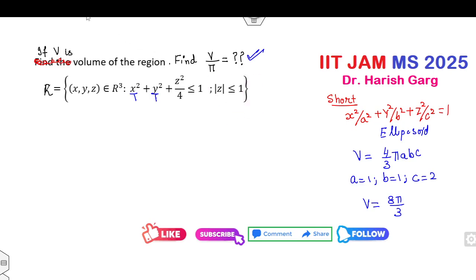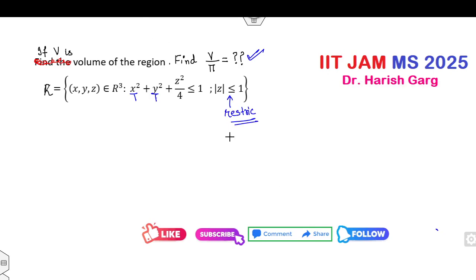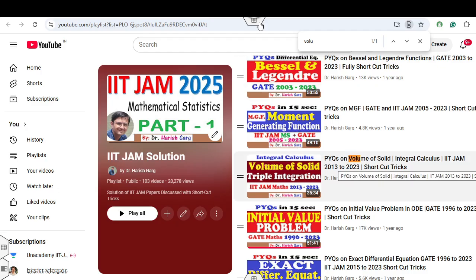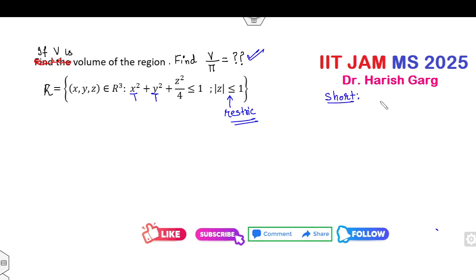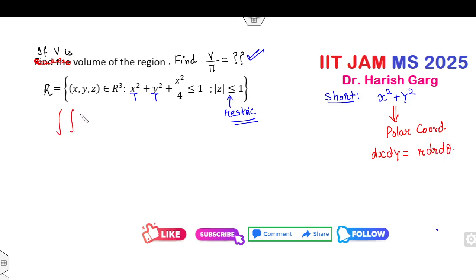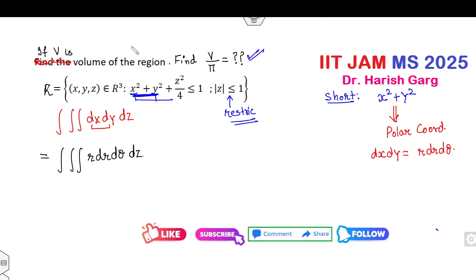Now, if the restriction |z| < 1 is given, you cannot apply the ellipsoid formula directly because of this constraint. To solve this quickly using the polar coordinate shortcut: whenever you see x² + y², convert to polar coordinates. Then dx dy becomes r dr dθ, so the volume integral dx dy dz becomes r dr dθ dz. The equation becomes r² + z²/4 ≤ 1.